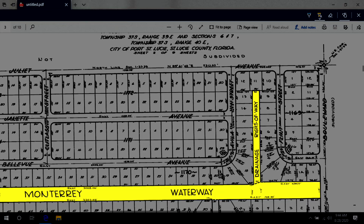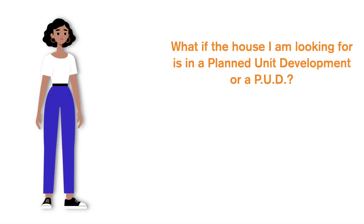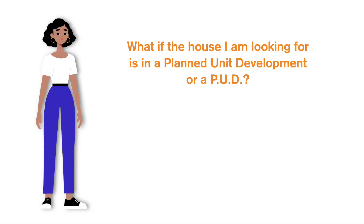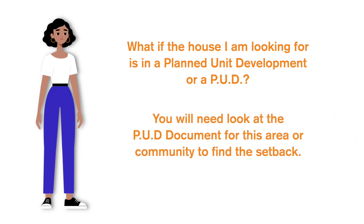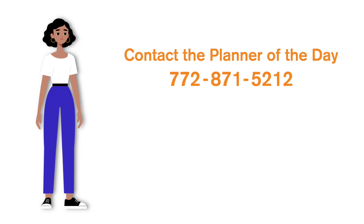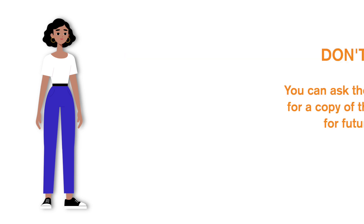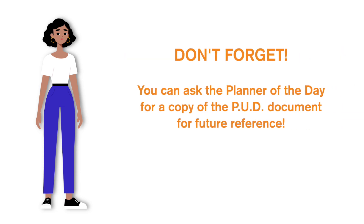The last scenario to mention is if the house you are seeking pool setbacks for is in a planned unit development, or PUD. In this case, you will need to look at the PUD document for that area or community to find the setbacks. PUD documents are accessible to planning staff, so you can contact the planner of the day at 772-871-5212 to obtain that information. Furthermore, it is a good idea to ask the planner of the day for the PUD document itself — that way, if you are ever looking for pool setbacks for another house in the same community, you have the documents to find them.